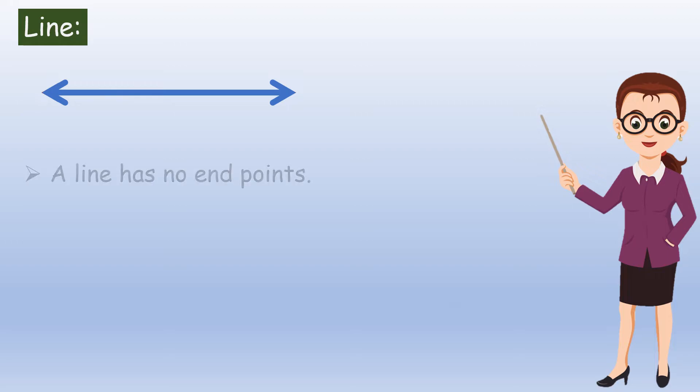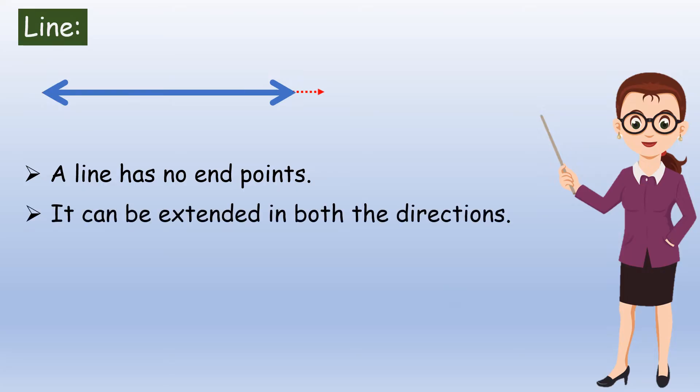Line. A line has no end points. Since a line is never ending, it can be extended in both directions. It has no fixed length and cannot be measured. It has arrow heads on both the sides.